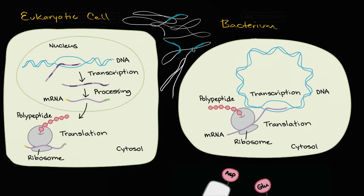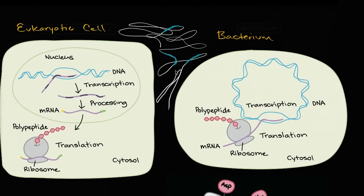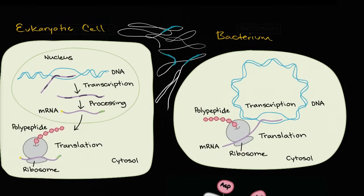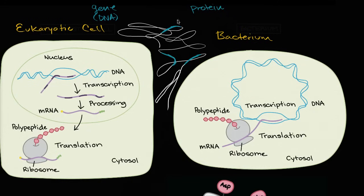The key question is: how do you go from the information encoded in these genes, encoded as sequences of DNA — how do you go from the gene, which is encoded in DNA, to protein? Protein is made up of polypeptides, which are made up of amino acids.